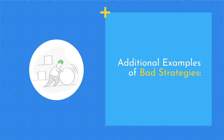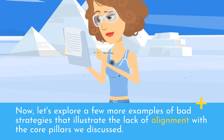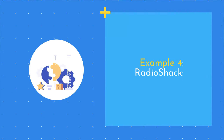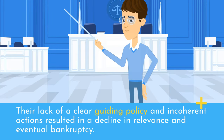Additional Examples of Bad Strategies. Now let's explore a few more examples of bad strategies that illustrate the lack of alignment with the core pillars we discussed. Example 4 — RadioShack. RadioShack, a retailer specializing in electronics, struggled to adapt to changing consumer preferences and the rise of online shopping. Their lack of a clear guiding policy and incoherent actions resulted in a decline in relevance and eventual bankruptcy.